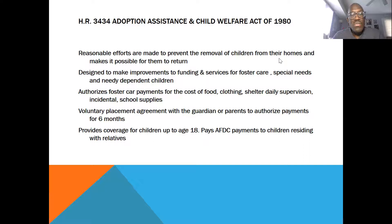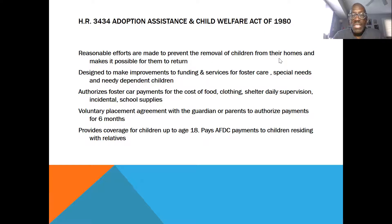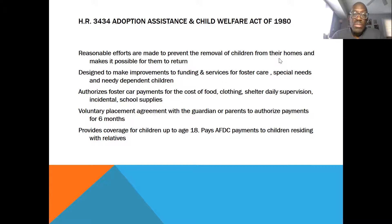The act also provides coverage for children up to age 18. As children reach 18, they age out of the system. It also utilizes Social Security-type benefits as well as AFDC — Aid for Dependent Children — payments to help offset the cost when kids are living with relatives. For example, a grandparent can pick up the kids because a parent isn't able to care for them, and in those instances they can apply for county assistance to pay for taking care of those children.